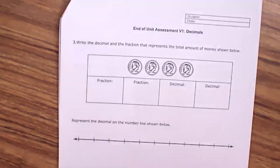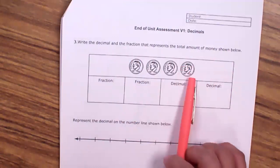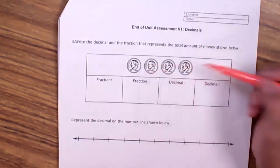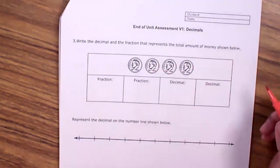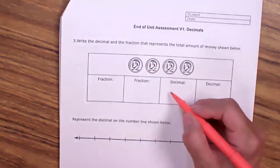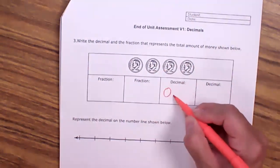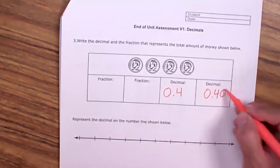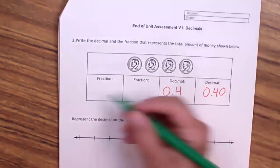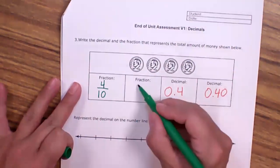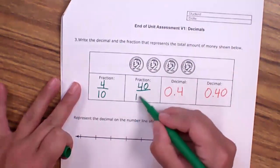Here it says to write the decimal and then the fraction that represents the total amount of money. I love looking at money because it helps me visualize my decimals and my fractions. Here I have four dimes — do you know how much four dimes is? It's 40 cents. It's not a whole dollar, so it's zero and 40 cents. I can start with my decimal because that's the one I can do best: zero and four dimes, another way zero and 40 cents. If I was to write this as a fraction, it would be four over ten. I can also look at it as having a value of 40 cents out of 100.